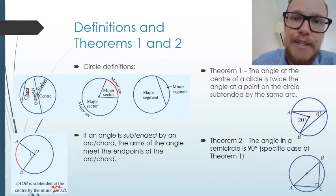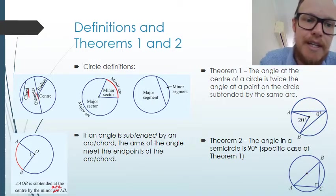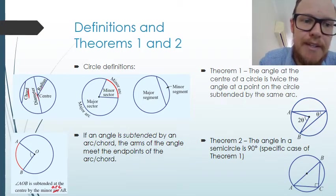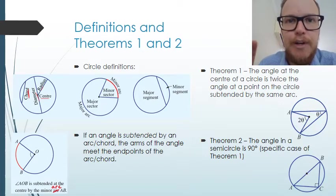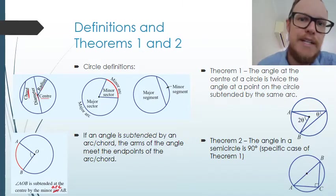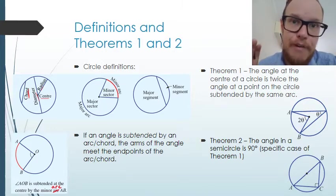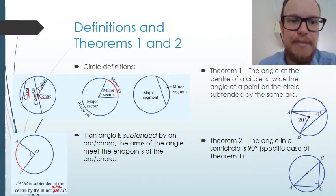A radius goes from the centre of the circle to any point on the outside of the circle. The centre of the circle is a point inside the circle that is equally distant from any point on the edge of the circle. This means that every radius will be exactly the same length.